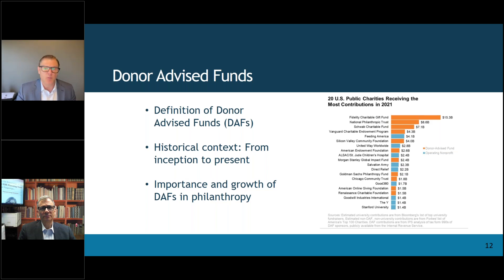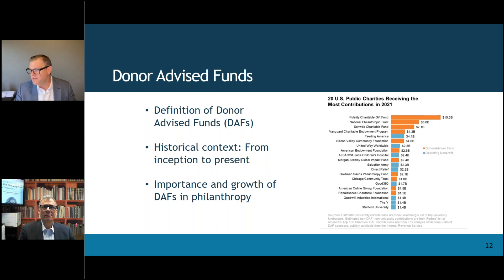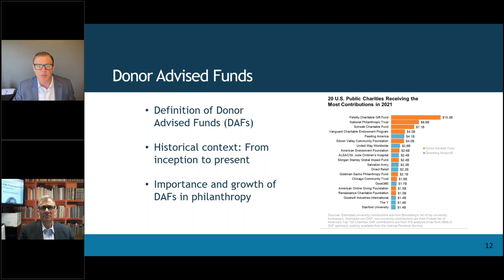That's just one of the many reasons why donor advised funds have become so appealing over the last two or three decades. National Philanthropic Trust did a study of DAFs in 2022, and at that time they said there was $230 billion in donor advised funds. That was already a couple of years ago, so it's probably well over $250 billion today and growing.